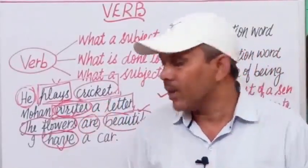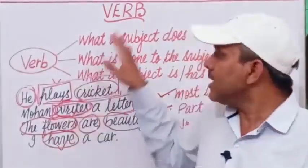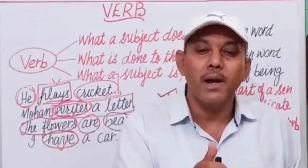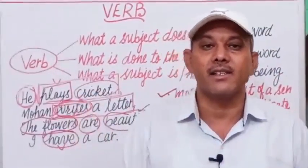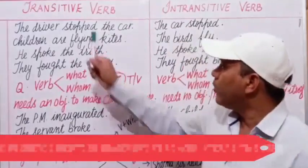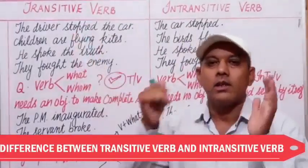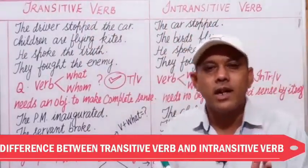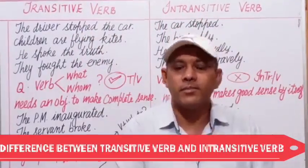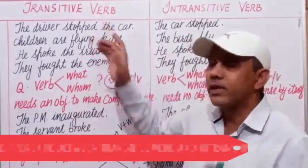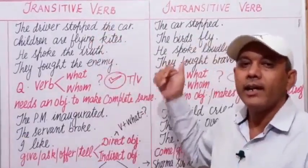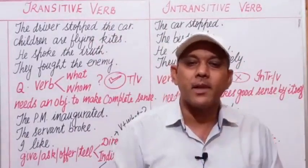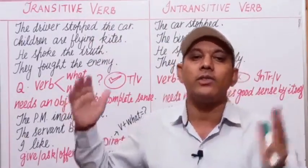We have learned the introductory part of verb — what a verb is and what role it plays in a sentence. Now we are going to learn the concept of transitive verbs and intransitive verbs and the difference between them. We should go through a few sentences and learn the uses of these verbs.